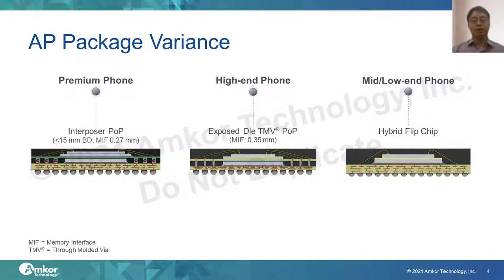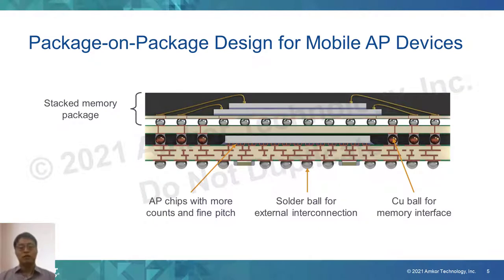This is the AP package portfolio in the market — laminate substrate based, not including fan-out packages. Depending on the level of functionality, package structures are different. The major difference is from the memory interface method. The premium phone has a 0.27 mm memory interface pitch, while the high-end one uses 0.35 mm pitch. A finer memory interface enables more I/O count and more function. Looking at package-on-package for premium smartphones: there is an AP chip in the middle of the package with top and bottom laminate substrate around it. The top substrate is for memory package mounting, and solder columns make the interconnection between the AP and memory chip. The top substrate as an interposer helps with flexibility on memory type and I/O layer. There are several key factors to consider moving toward higher performance and smaller form factor, apart from package height.